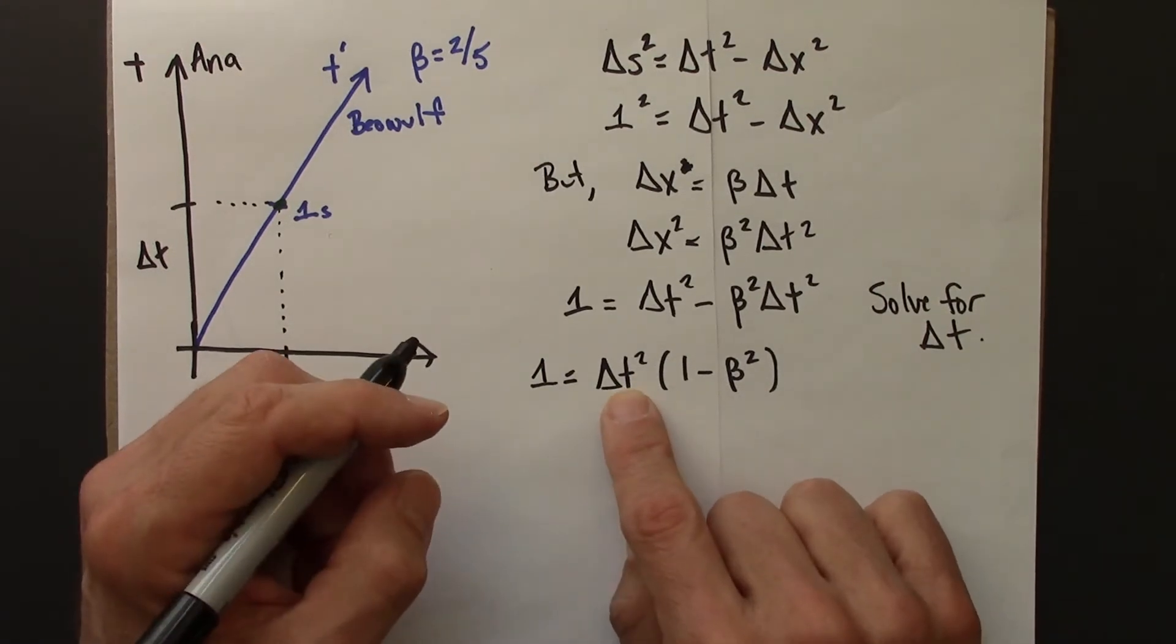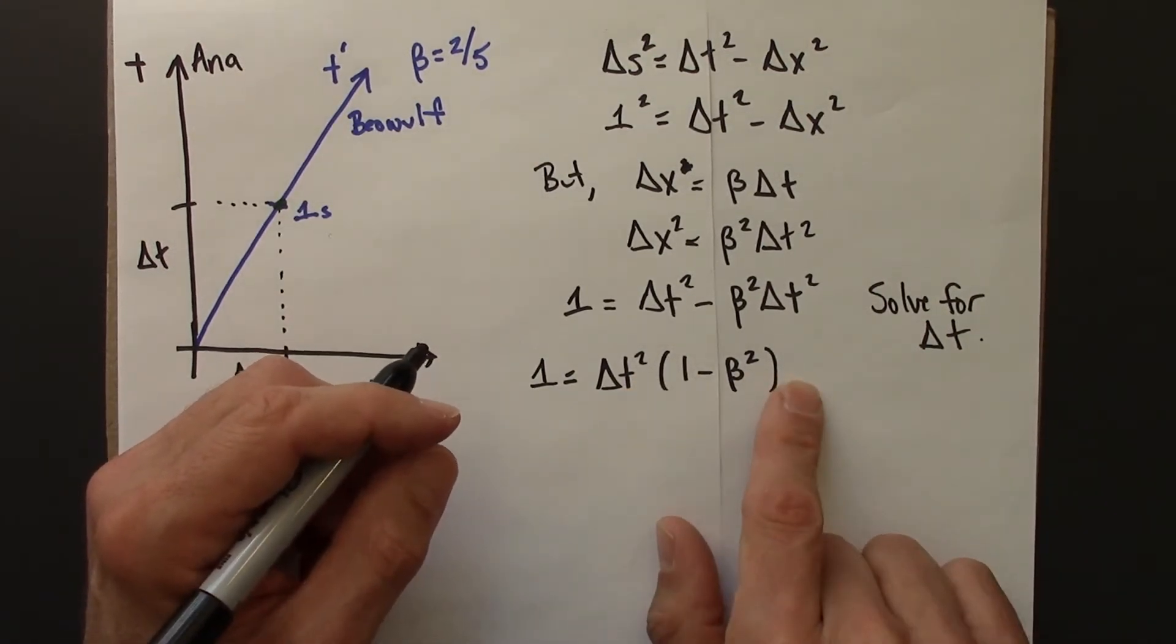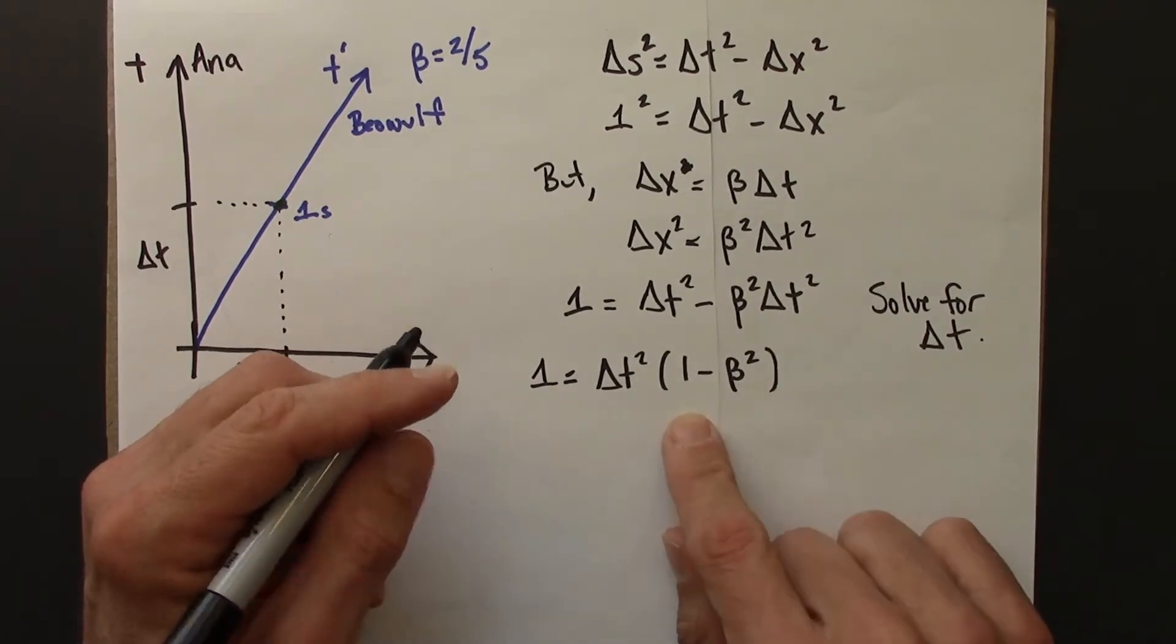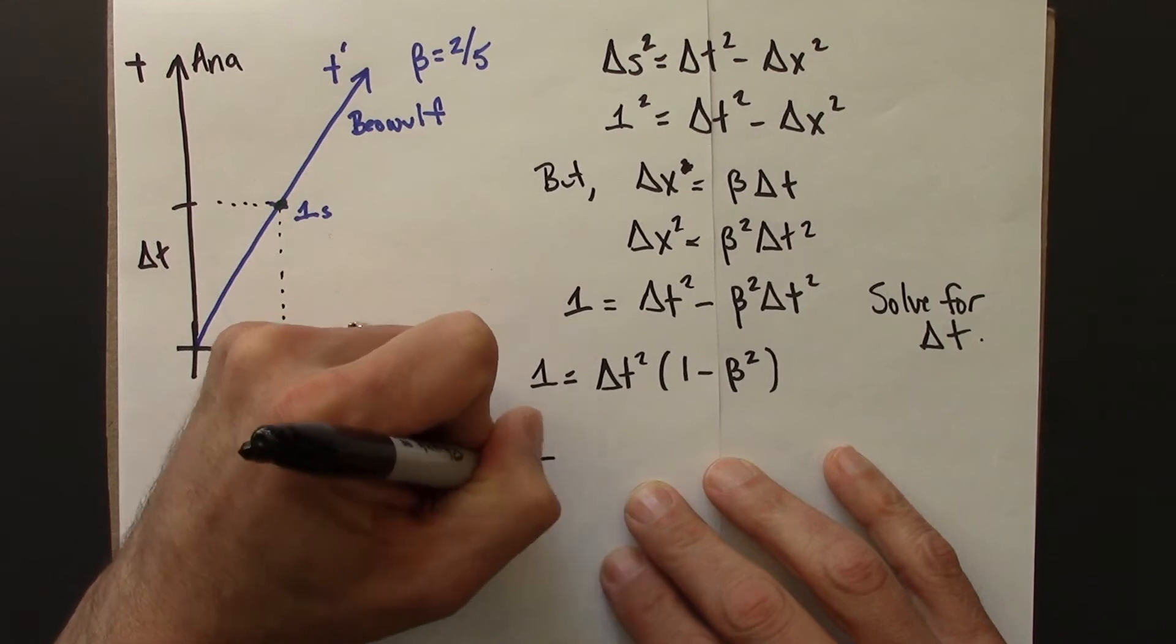Alright, so I want to get delta t all by itself. I've got this term in parenthesis. I'm going to move that to the left by dividing both sides by the term in parenthesis. So then this is going to give me this.